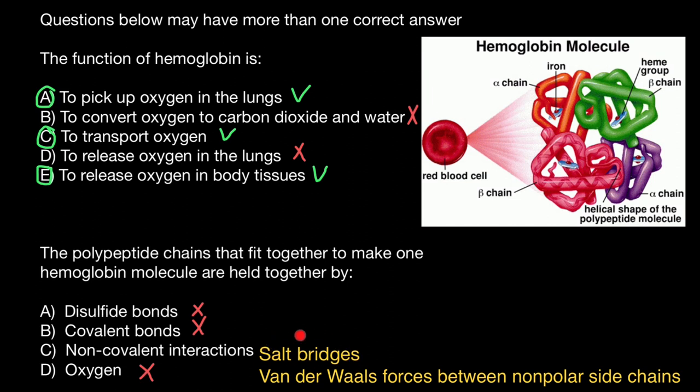Another one is going to be salt bridges between R groups that have different charge, positive and negative charge. So they would form salt bridges. Another example is going to be hydrogen bonding. And the last non-covalent interactions that hold together these four polypeptide chains would be hydrophobic interactions. So the only correct choice would be answer C.